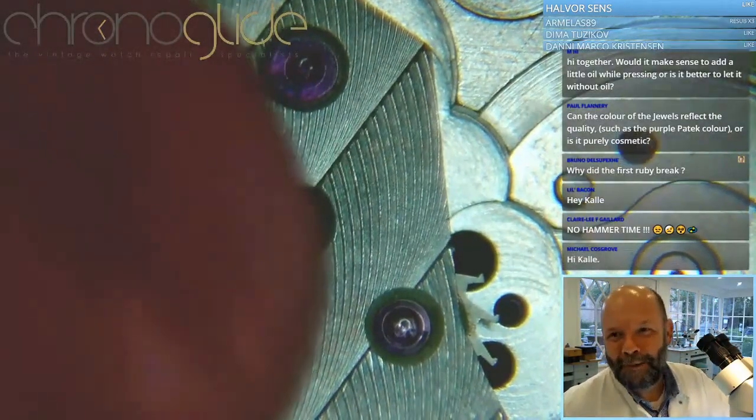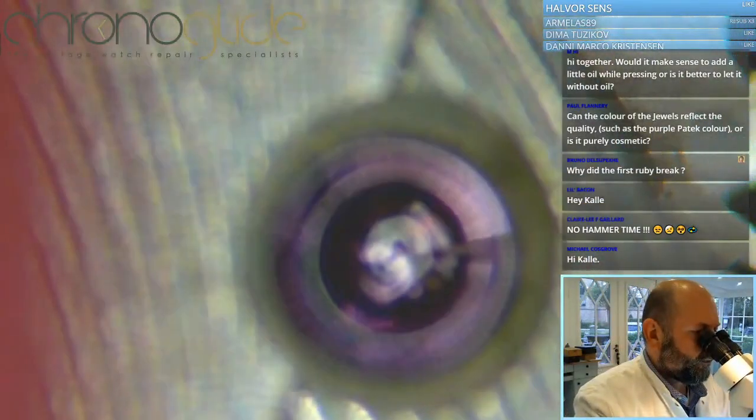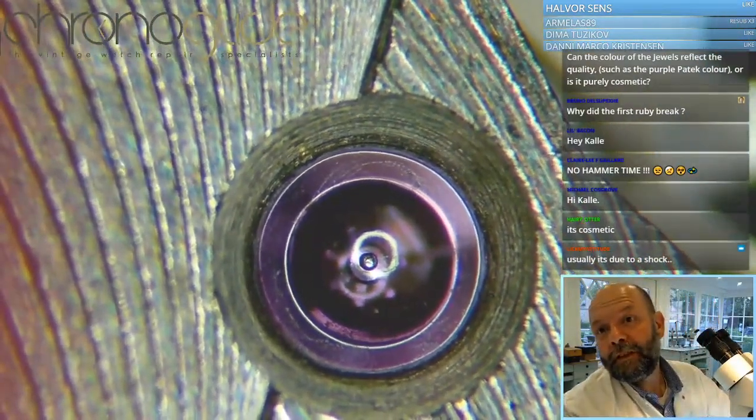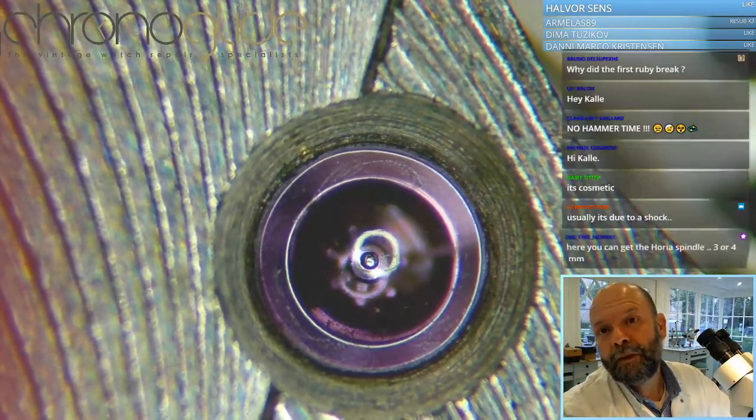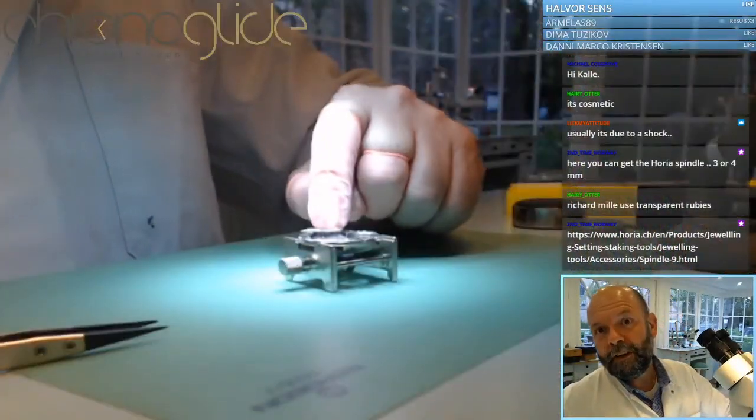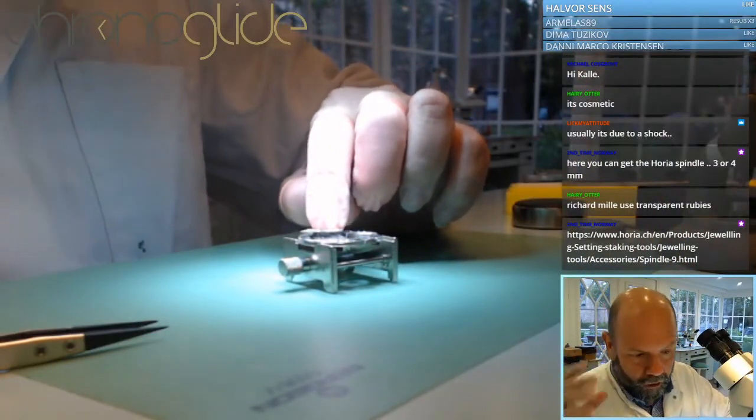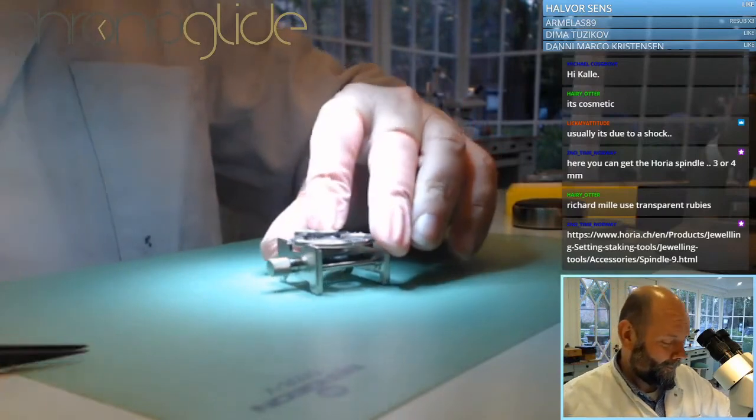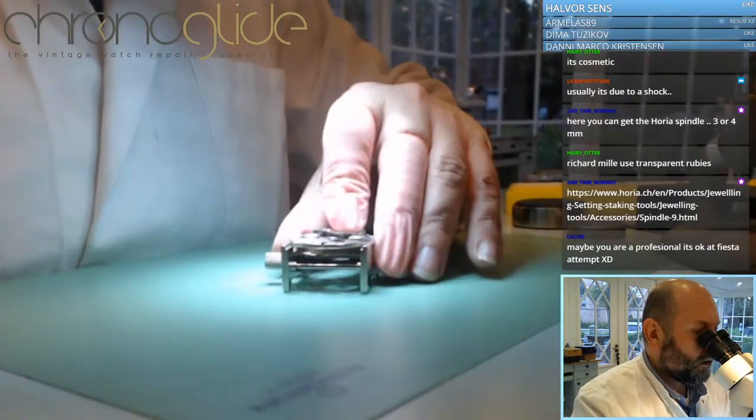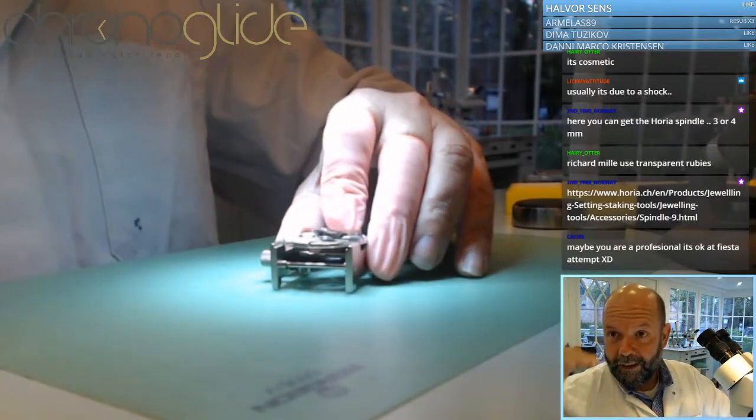No hammer time. Well, maybe in a moment. As you can see, the pivot just fits in the inner diameter of the jewel. I press with my finger and I don't feel that the bridge is balancing on top of the jewel, which is a good thing. Now we have to check the end shake.